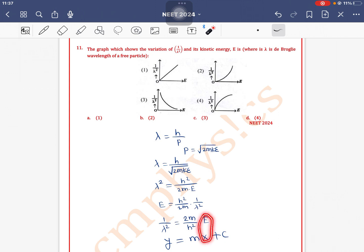On x axis, it is E. On y axis, it is 1 by lambda square. And y intercept is 0. So straight line passing through origin means option A is the correct one.